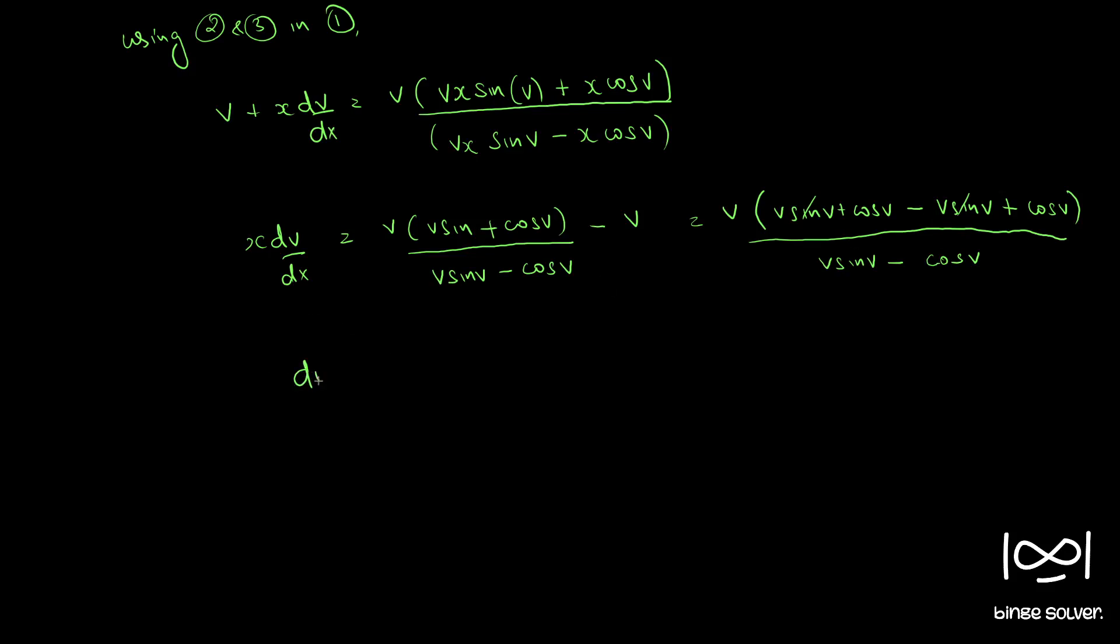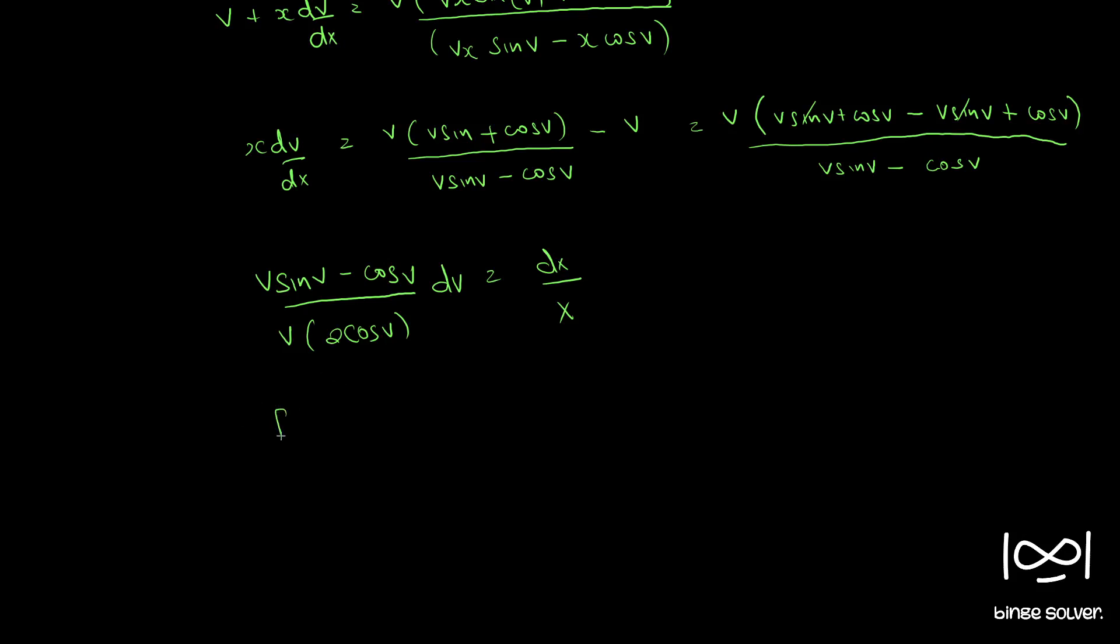So we can write (v sin(v) - cos(v)) by (v times 2 cos(v)) dv equal to dx/x. Let's open this up. We get 1/2 times (sin(v)/cos(v) - 1/v).